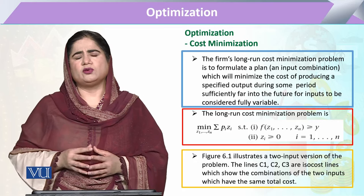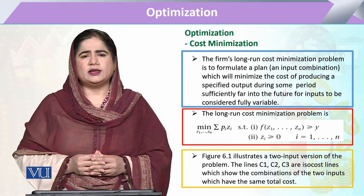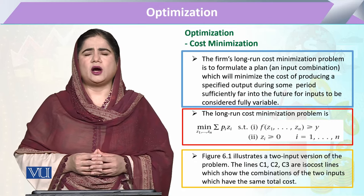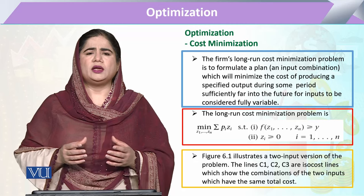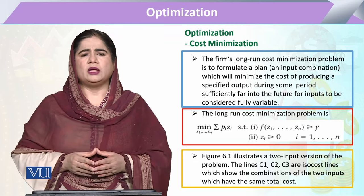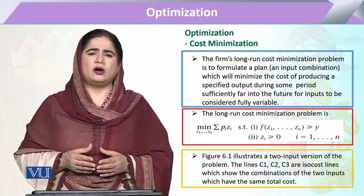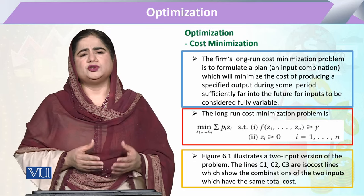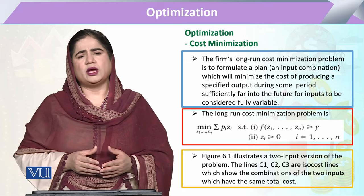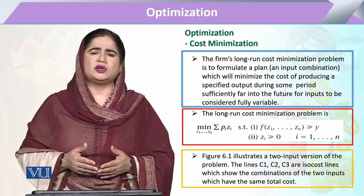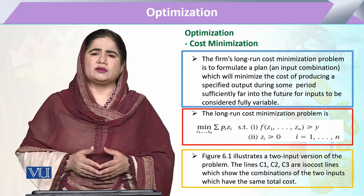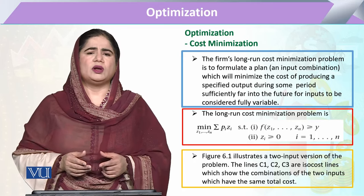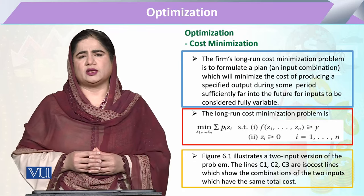One more thing we have to work out here: when we calculate the output, we say that is the output per any specified time — meaning this is the working capacity of any machine. It has produced 100 units per week, or 1000 units per month, and likewise. So when we measure output, we look at it alongside a particular time flow.